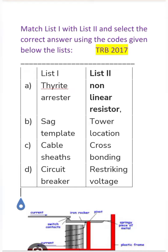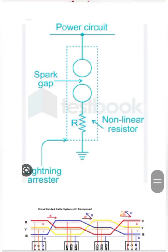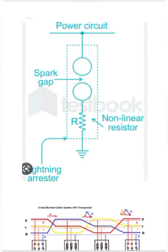Let's look at the lightning arrester. This is a lightning arrester, and it is a non-linear resistor. The current, temperature, and voltage change its value.